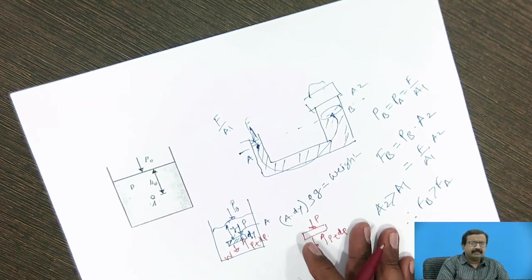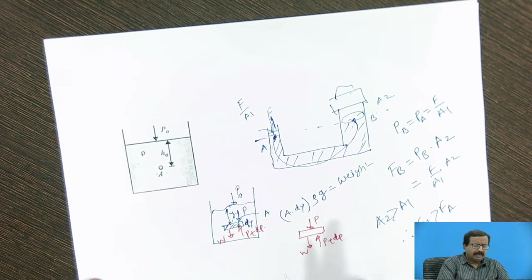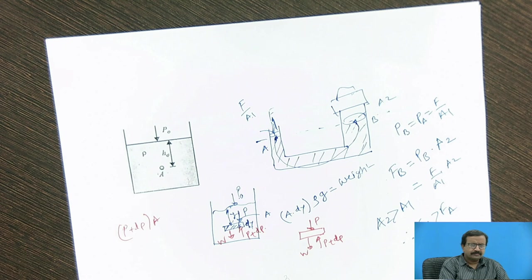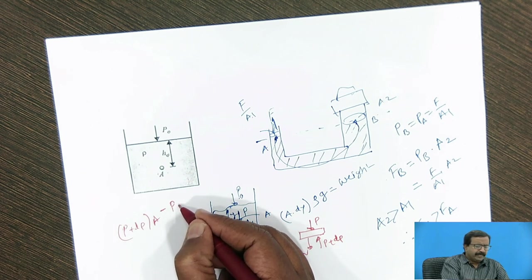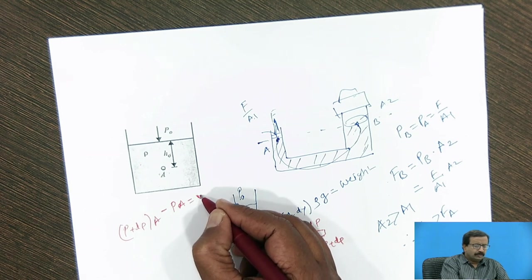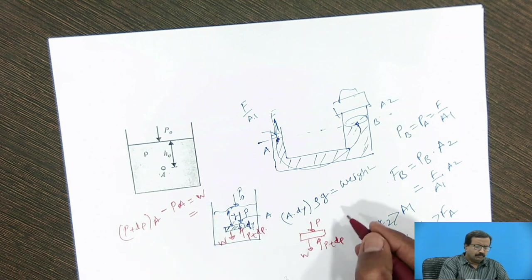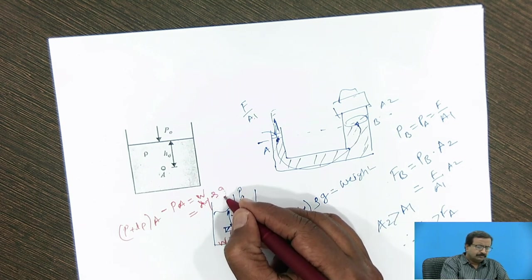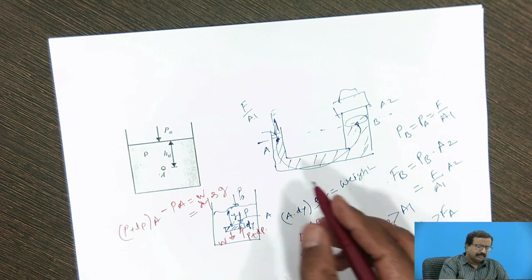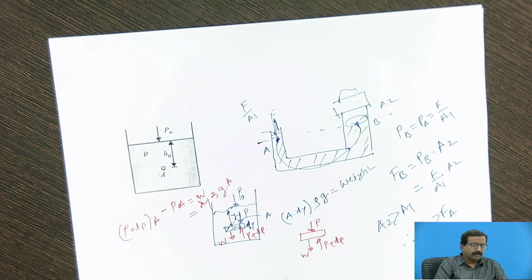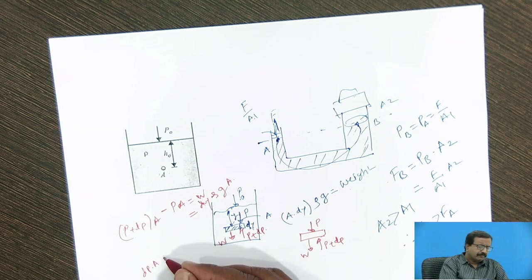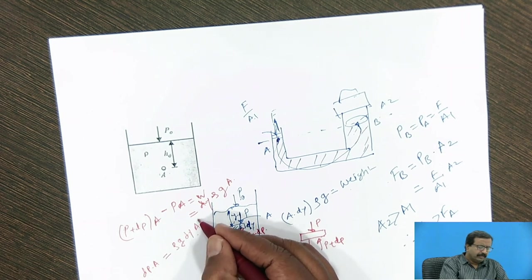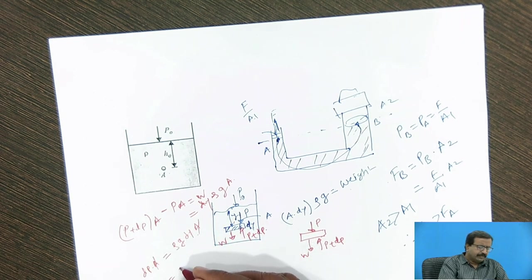If I write it, say Newton's law or free body diagram and the equations, so it will be p plus dp, p plus dp into area. So that is the force. Minus p into area is equal to w, that is the weight which is equal to dy, rho g, dy, ρ g and a. Because I know the total weight of this. Now if I do this, I will get dp into a is equal to ρ g dy into a. So a will get cancelled and I will get dp is equal to ρ g dy.